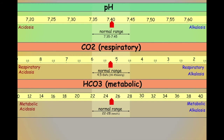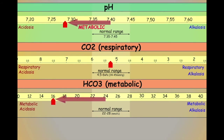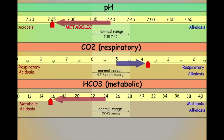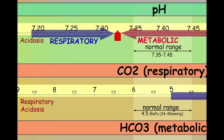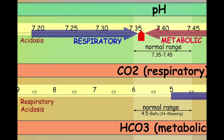Let's go back to our type 1 diabetic suffering from a ketoacidosis. Acid is being produced by ketones, which is pushing the metabolic component in an acidotic direction. The body can respond to this metabolic acidosis by signaling the lungs to work harder. The work of breathing will increase and the carbon dioxide levels in the blood will be pushed downwards. The metabolic system may be pushing in an acidotic direction, but the respiratory system is attempting to compensate for this by pushing in an alkalotic direction.